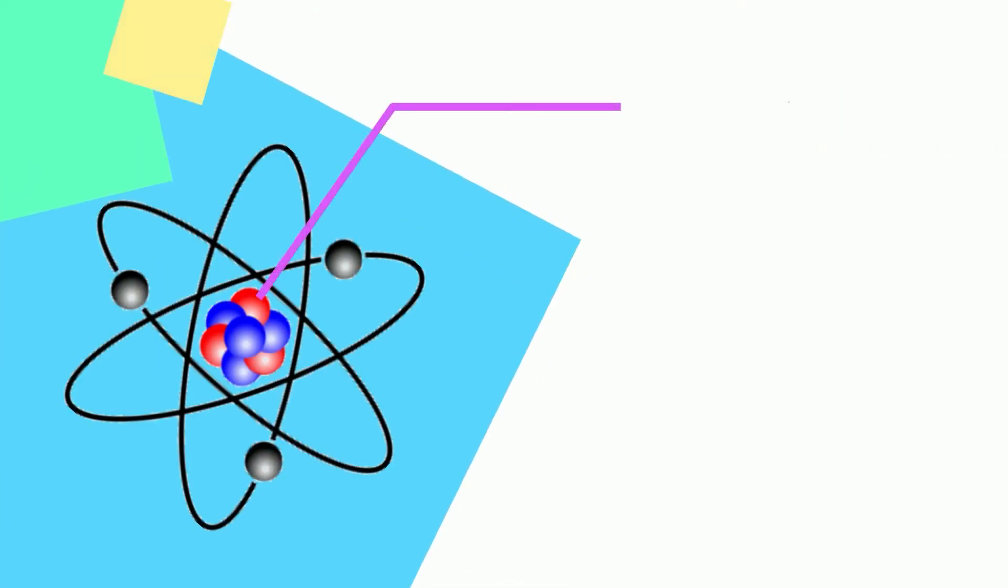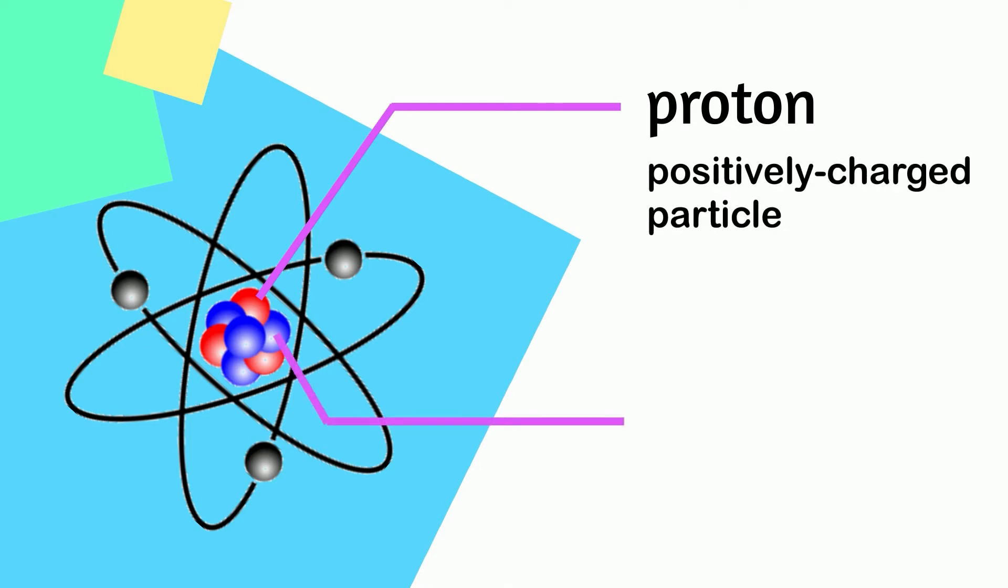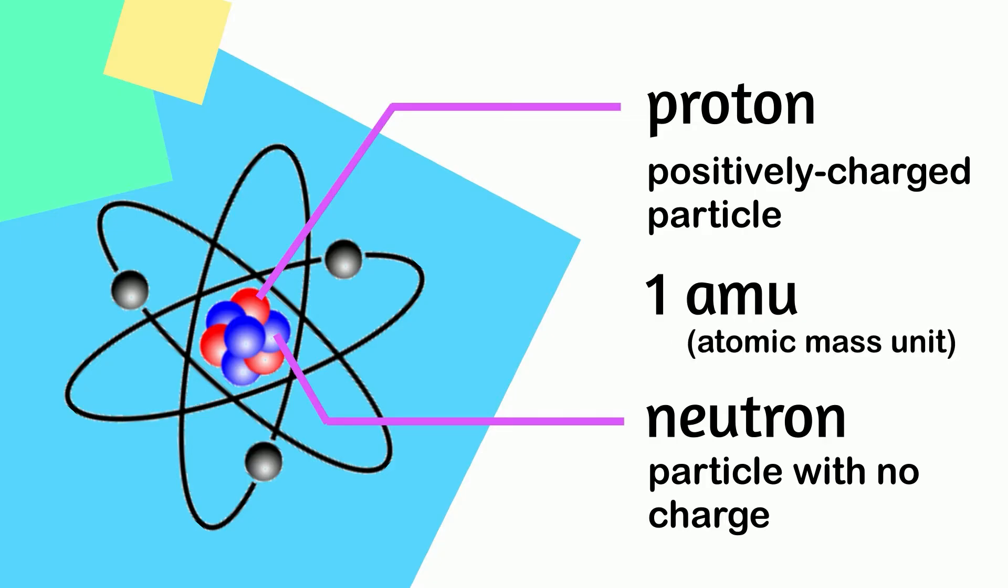Protons are positively charged particles that are found in the nucleus of the atom. They are found together with the neutrons, which are the particles without a charge. They both have a relative mass of one AMU or one atomic mass unit.